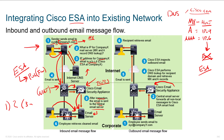For outbound email, the employee sends it to their email server inside the company. That email server looks at the domain and sees it's not local, so it needs to send it outbound. Your company's email server has an upstream relay configured. Rather than doing the DNS lookup itself and delivering directly, it passes the email to the next hop — the ESA.